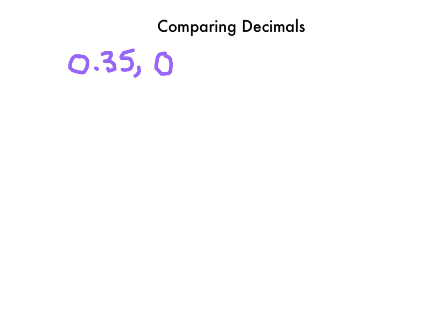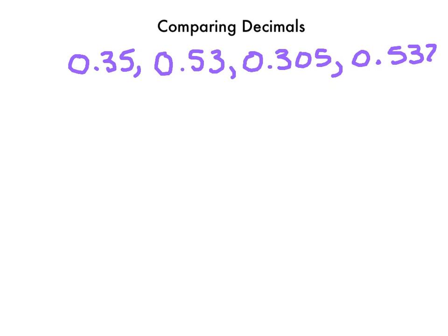3,500ths. Let's do 5,300ths. 305,000ths. Very good. And... tricky one. 532,000ths. Alright.